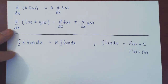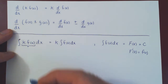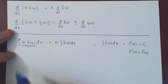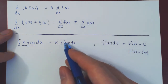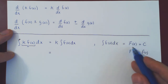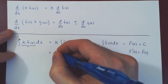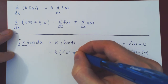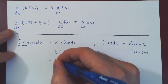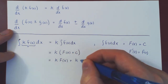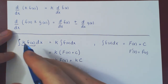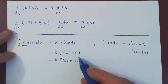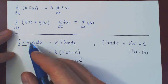We are trying to integrate k f of x, and what we're saying is that k times the integral of f of x dx is the answer. So the derivative of our answer should be k f of x. Replacing the indefinite integral by its anti-derivative form, we have k times uppercase F plus C, which gives k uppercase F of x plus kC.